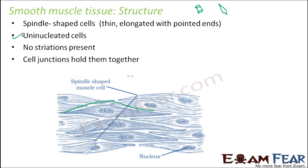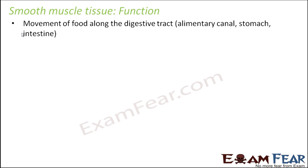Cell junctions hold smooth muscle cells together. Their function: they are involved in the movement of food along the digestive tract. When you eat something, you put food into your mouth, move your teeth to chew — all of that is under your will. But once you have chewed and swallowed the food, if you want to stop the food from going into the stomach, you cannot. Once it has entered the food pipe, the movement of the food happens on its own, under the control of smooth muscles present along the digestive tract.